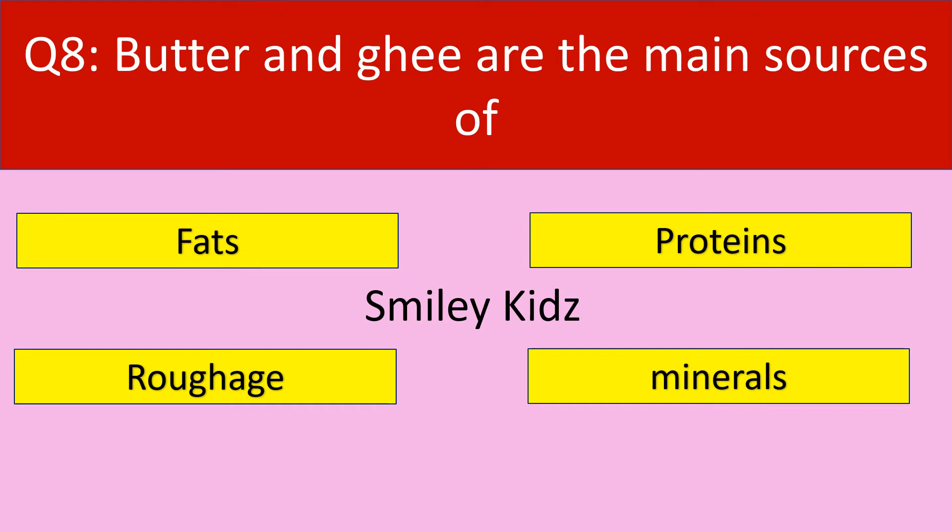Question number 8. Butter and ghee are the main sources of dash. Options are: fats, proteins, roughage, and minerals.